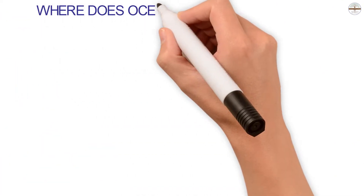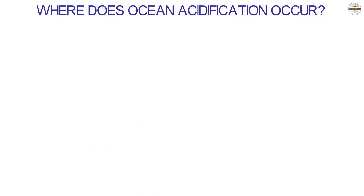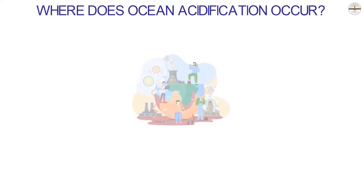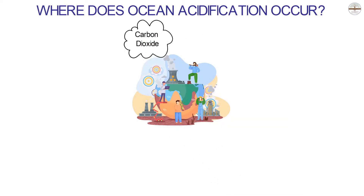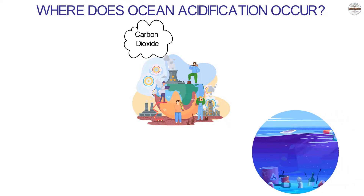Where does ocean acidification occur? Acidification harms every ocean in the world. Unfortunately, human activities make the amount of carbon dioxide in the air rise. Therefore, oceans are getting more CO2 than ever before, and the growing acidification problem affects the whole ocean.